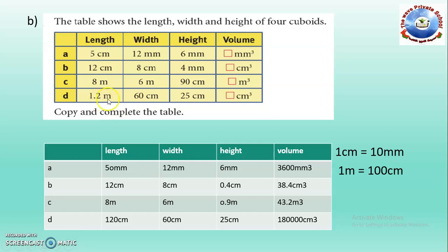Part D: 1.2 meters is the length, 60 centimeters is the width and 25 centimeters is the height. The answer is in cubic centimeters. So convert 1.2 meters into centimeters — it becomes 120 centimeters, since 1 meter equals 100 centimeters. Width is 60 cm and height is 25 cm. Multiplying all three gives 180,000 cubic centimeters.